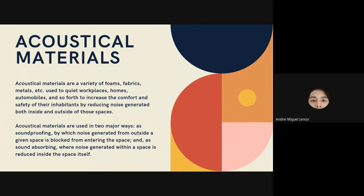Acoustical materials are used in two major ways: number one, as soundproofing, by which noise generated from outside a given space is blocked from entering; and as sound absorption, where noise generated within a space is reduced inside the space itself. Acoustical materials are commonly used in places such as sound recording studios, convention areas, or other places which mostly generate sounds or music.